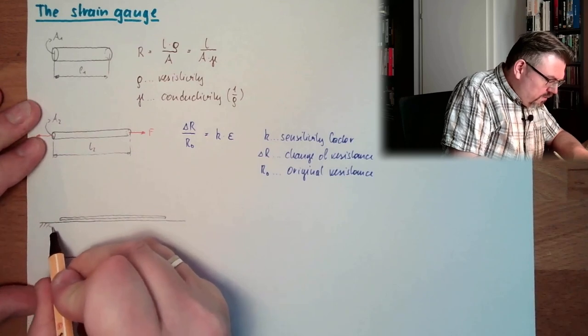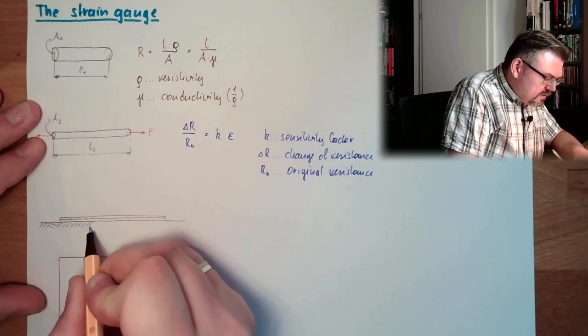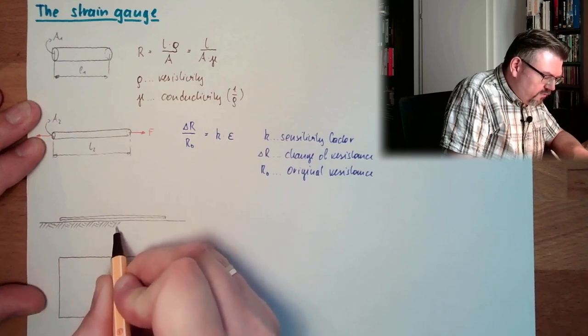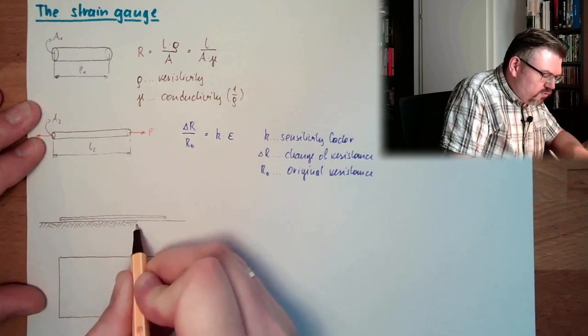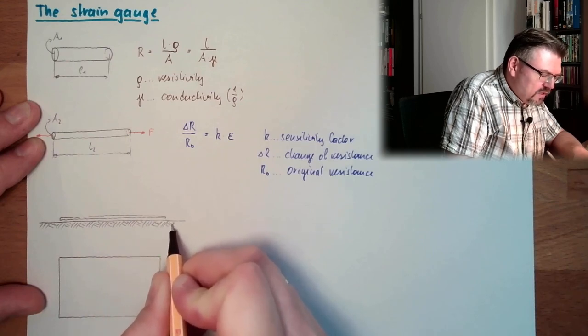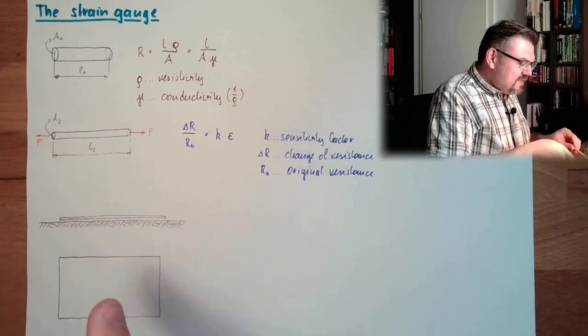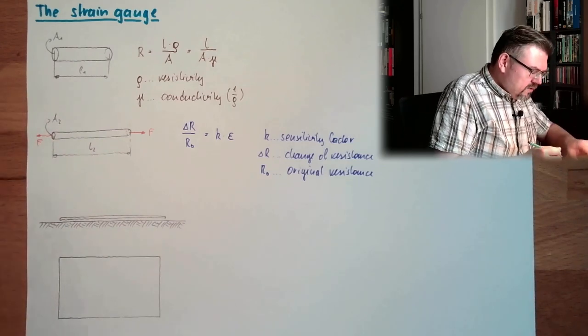Here somewhere we have the surface we apply. This is the application surface here. Here we want to measure the resistance, the force, the stress, the strain. This is our work piece we want to measure. This is glued.